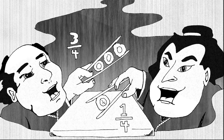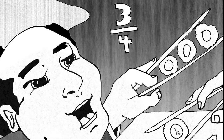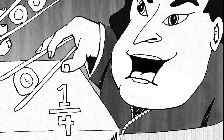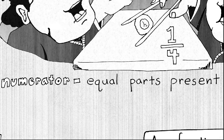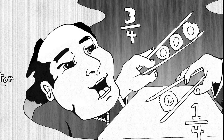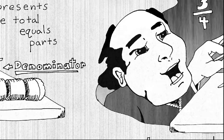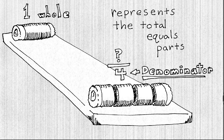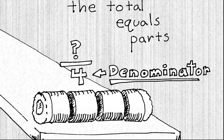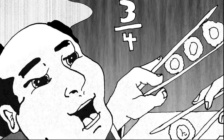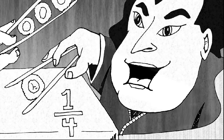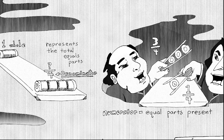Now let's finish the fraction. In the middle we have two friendly sumo wrestlers who are eating the sushi roll. The one on the left is eating three-fourths of the sushi roll because he's eating three of those pieces. The one on the right is eating one-fourth because he's only eating one piece. The numerator — the number on top — tells us the equal parts present. The sumo wrestler on the left has three pieces, so his fraction is three-fourths. The sumo wrestler on the right is eating one-fourth. I guess he's on a diet!